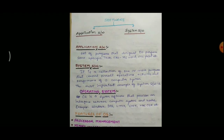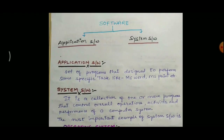The next point is types of software. There are two types of software. The first one is application software and the second is system software. I will give a brief description about application software, and the main focus will be on system software.